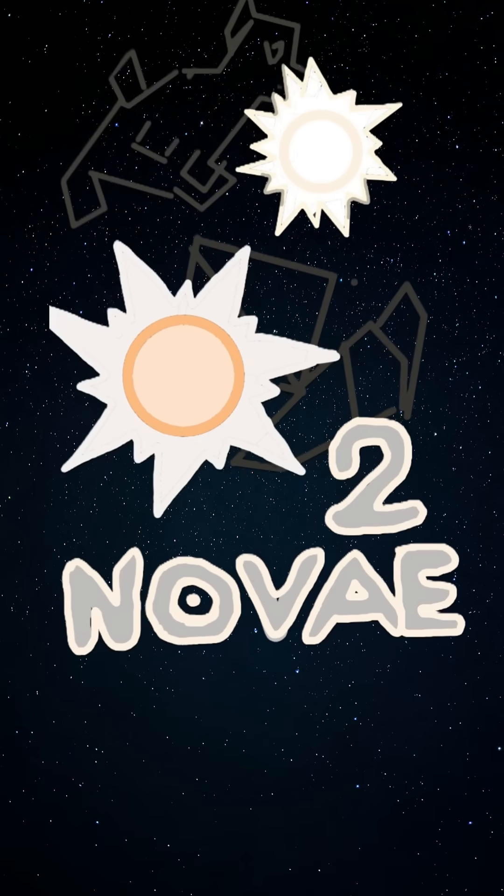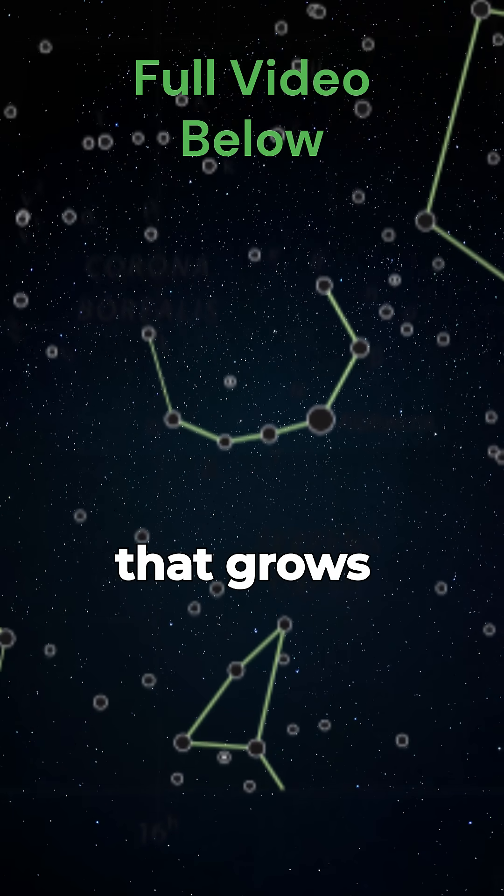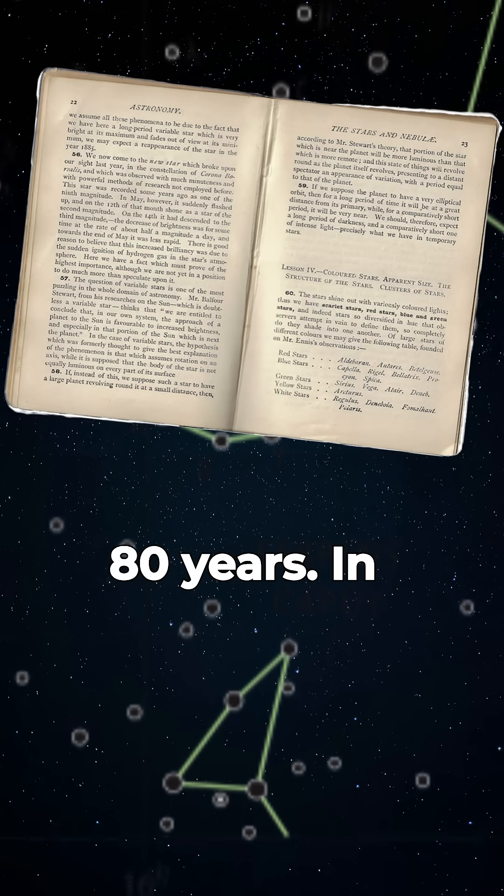Another new star just appeared in the sky. Last week, I talked about T Corone Borealis, a recurrent nova that grows bright enough to appear in our sky roughly every 80 years.